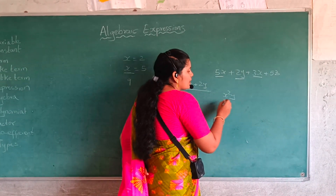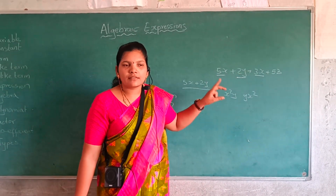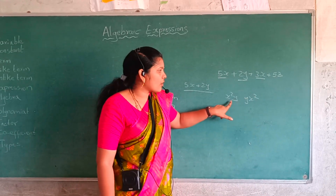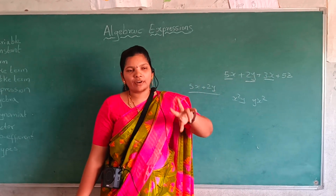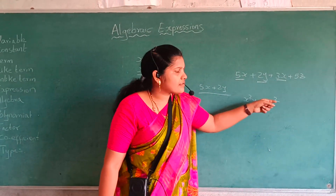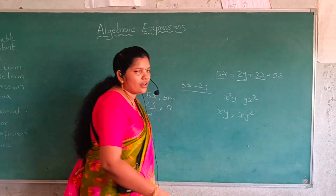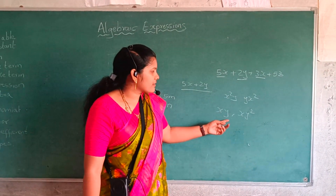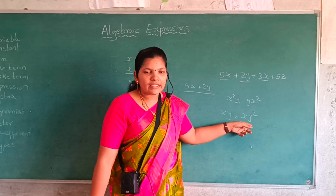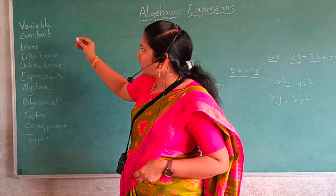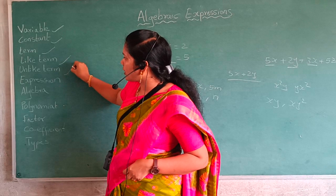For example, x squared y and yx squared are like terms. Here we have x times x times y, and also y times x times x — both have 2 x's and 1 y, so x squared y and yx squared are like terms. But xy and xy squared are unlike terms, because xy has one y while xy squared has two y's. So those are called unlike terms.